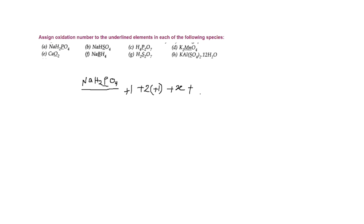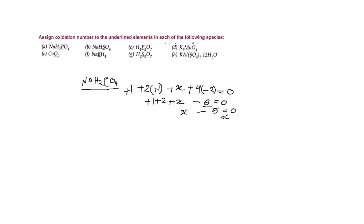Oxygen has a minus two oxidation state. Four oxygens are there, so we set the whole expression equal to zero: plus one plus two plus x minus eight equals zero. So x minus eight plus three equals zero, which gives x equals plus five.